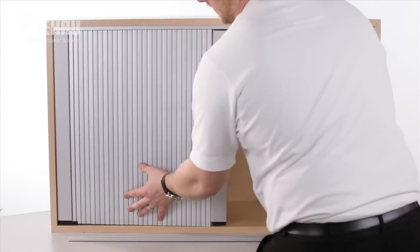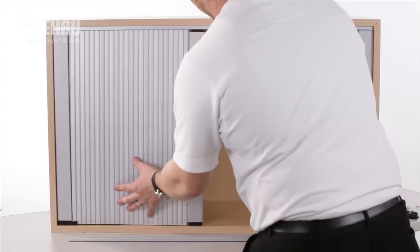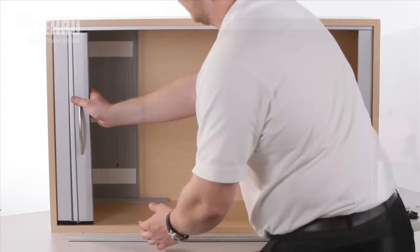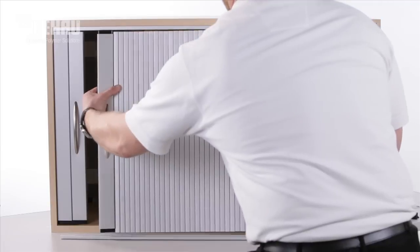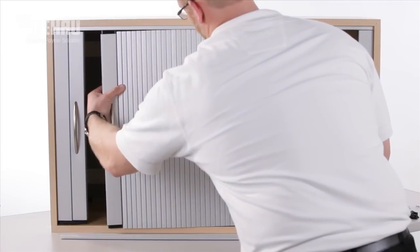Take the tambour carpet and carefully feed the first door into the track, leaving the door in the fully open position. Align and insert the second door into the top track.